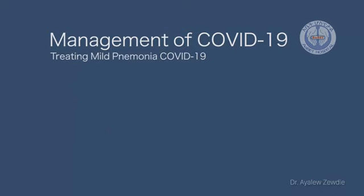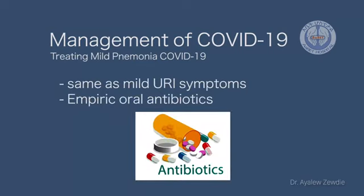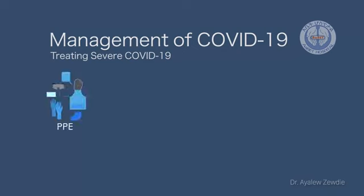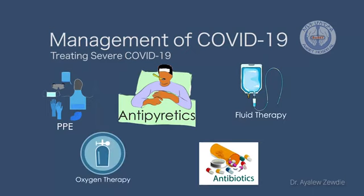For patients with mild pneumonia, start management as with mild URI symptoms, and also start empiric oral antibiotics. For severe COVID-19, start with PPE, antipyretics, and conservative fluid therapy. Oxygen therapy follows. Empiric antibiotics should also be started.